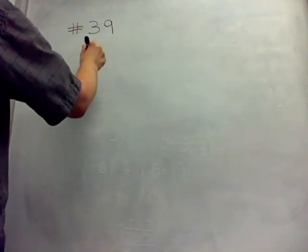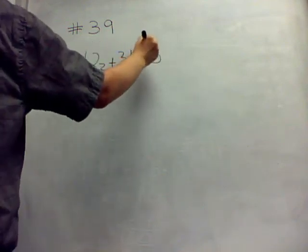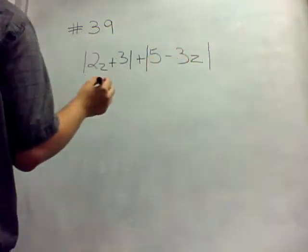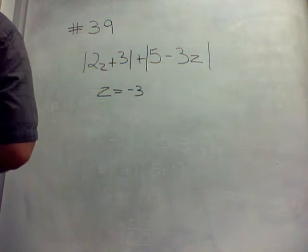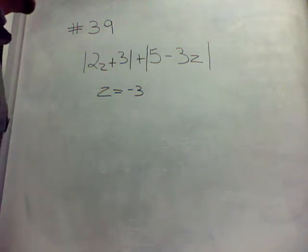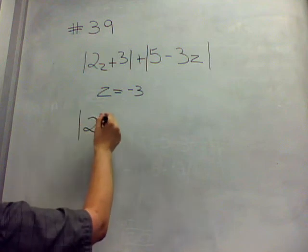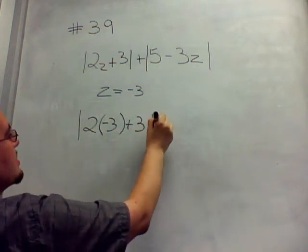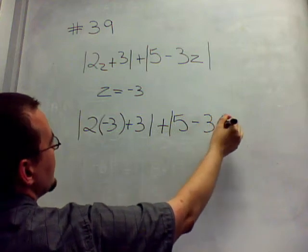Number 39. We're working with absolute values here. The absolute value of 2z plus 3, plus the absolute value of 5 minus 3z, where z equals negative 3. Similar to what we were doing before, but now we just have absolute values. First, we're going to plug in z for everything we see where there's a z. So 2 times z, which is negative 3, plus 3, plus the absolute value of 5 minus 3 times z, which is negative 3.